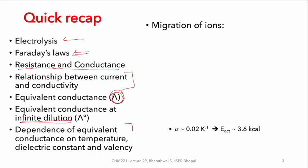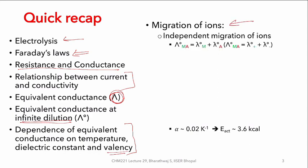We also understood the dependence of equivalent conductance on temperature, dielectric constant, and valency. Following this, we tried to map how ions end up migrating. The theory of independent migration of ions was put forth, where the total conductance from a given salt is nothing but the sum of the individual ionic conductances of the ions that are present.